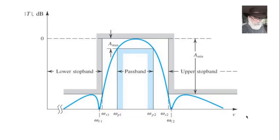In a band pass filter, we can also identify A_max and omega_p, and omega_s and A_min. The difference is that now we have two edges to the pass band — omega_p1 and omega_p2 — and similarly for the stop band: omega_s1 and omega_s2.